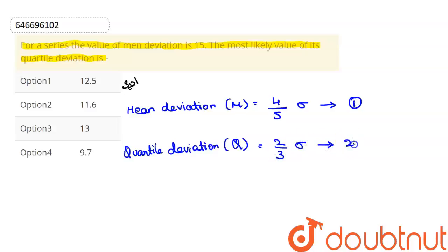Let's simplify this. First equation divided by second equation. So that means M divided by Q, equal to M value is 4 divided by 5 into sigma, then Q into the multiplication side, so then it will be 3 divided by 2 into sigma. Here sigma sigma will be cancelled.